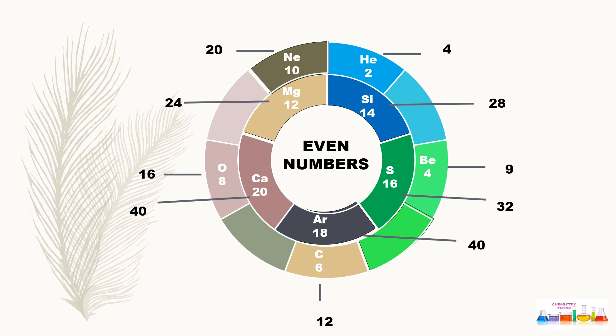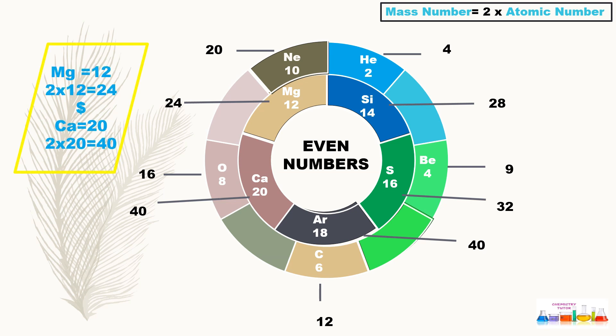If you notice, every atomic mass or mass number is double of its atomic number. So it means we can use this trick: mass number or atomic mass equals 2 times atomic number. If we take magnesium which is 12, we multiply 12 by 2 to get 24. You can see 24 is the atomic mass of magnesium.